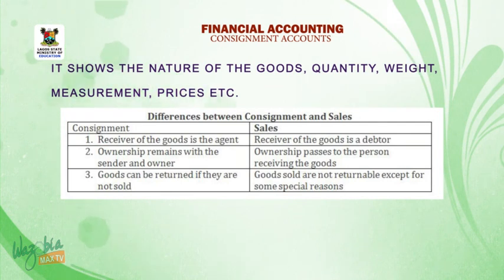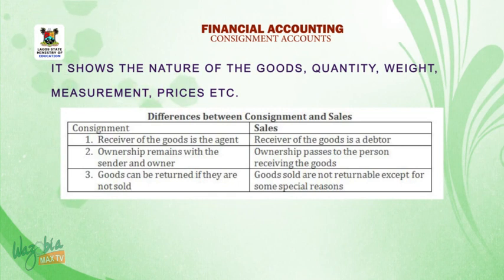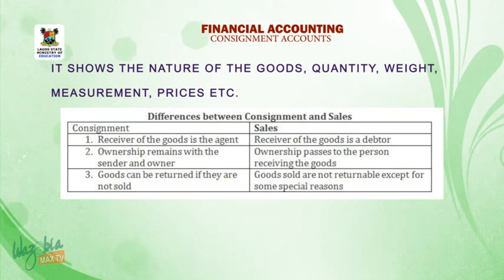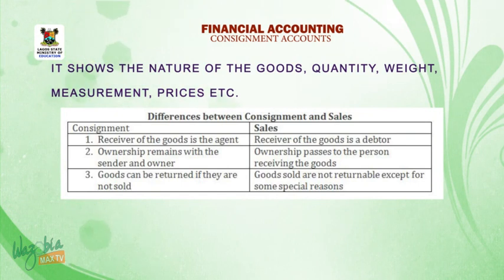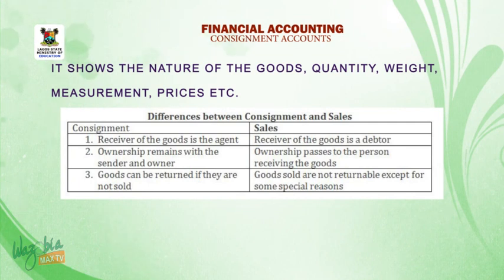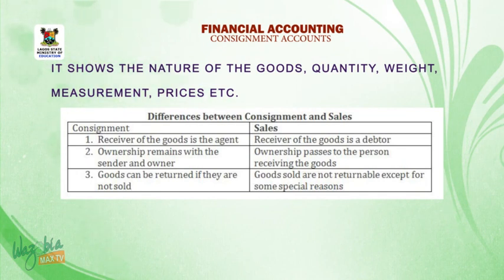Differences between consignment and sales: one, under consignment the receiver of goods is the agent, while in sales the receiver is a debtor. Two, in consignment ownership remains with the sender and owner, while in sales ownership passes to the person receiving the goods. Three, under consignment goods can be returned if they are not sold, whereas under sales goods sold are not returnable except for special reasons. Let's go on a short break now; we will come back and continue.